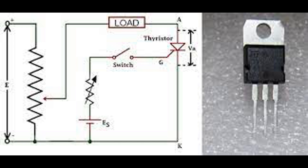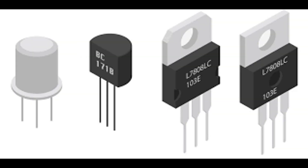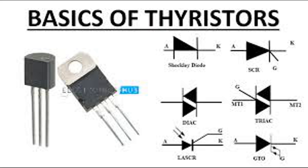Reverse blocking mode condition: a negative voltage is applied to the anode with respect to the cathode. Behavior: junctions J1 and J3 are reverse biased; junction J2 is forward biased; the thyristor remains in a high impedance state, preventing current flow — the device is in the off state, blocking reverse current. Turnoff mechanisms — Natural commutation: the thyristor turns off when current drops below the holding current during the natural zero crossing of an AC cycle. Forced commutation: in DC circuits, additional circuitry forces the current to zero by applying a reverse voltage or diverting current through an alternate path.